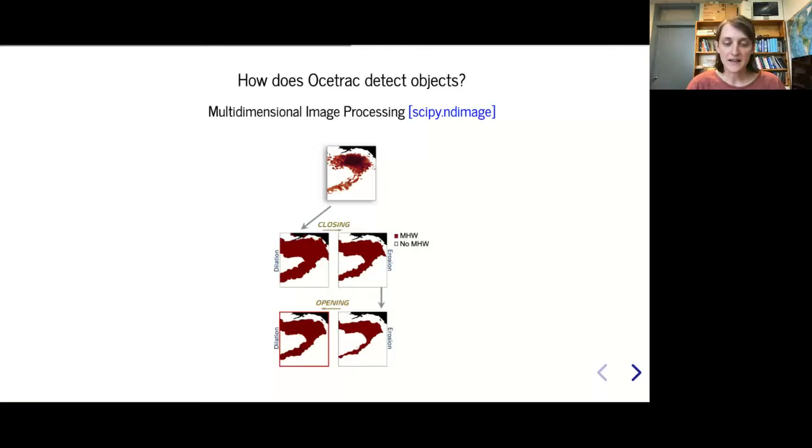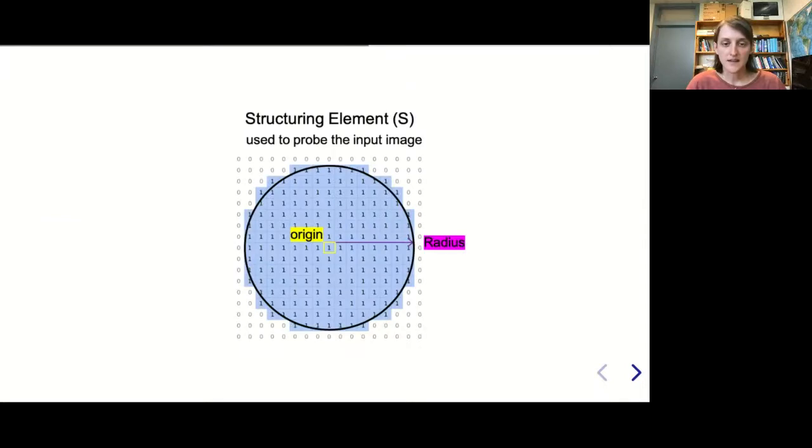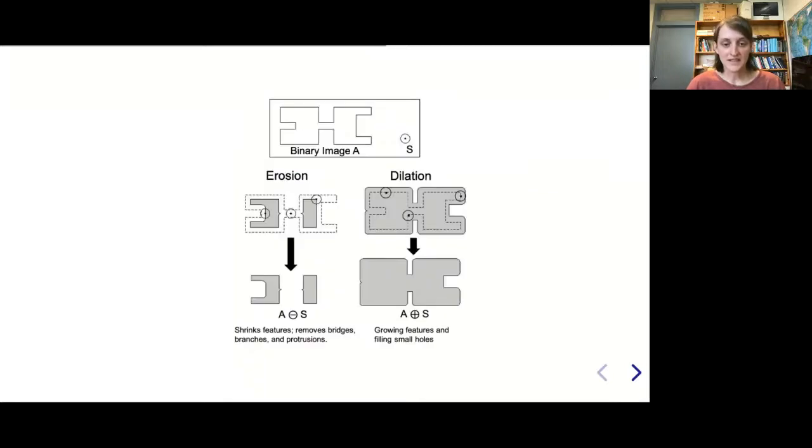After we have the binary image, we run it through SciPy ndimage, a morphological package that does opening and closing. Opening dilates your image, closing erodes it away. This smooths the contours while eliminating small heat islands. In OAStrack there's a parameter called radius that defines the size of the structuring element used to scan over your image for morphological opening and closing.